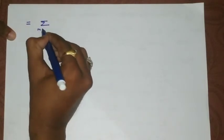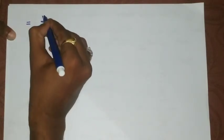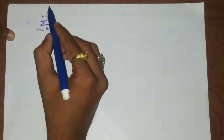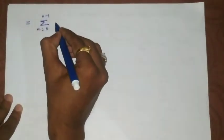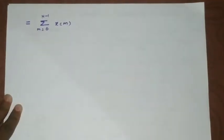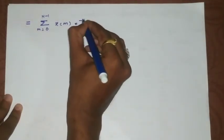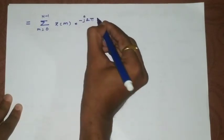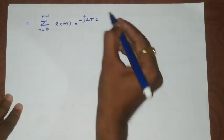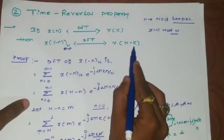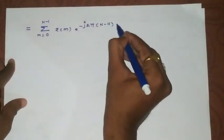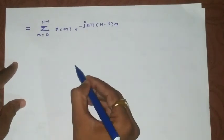Rewriting the summation from 0 to N-1 (equivalent to 1 to N), keeping x(m) as is. According to the DFT formula we need e^(-j2πkm/N), but here we have a positive exponent. We need to adjust the sign to get e^(-j2π(N-k)m/N) by writing k as N-k in the exponent.